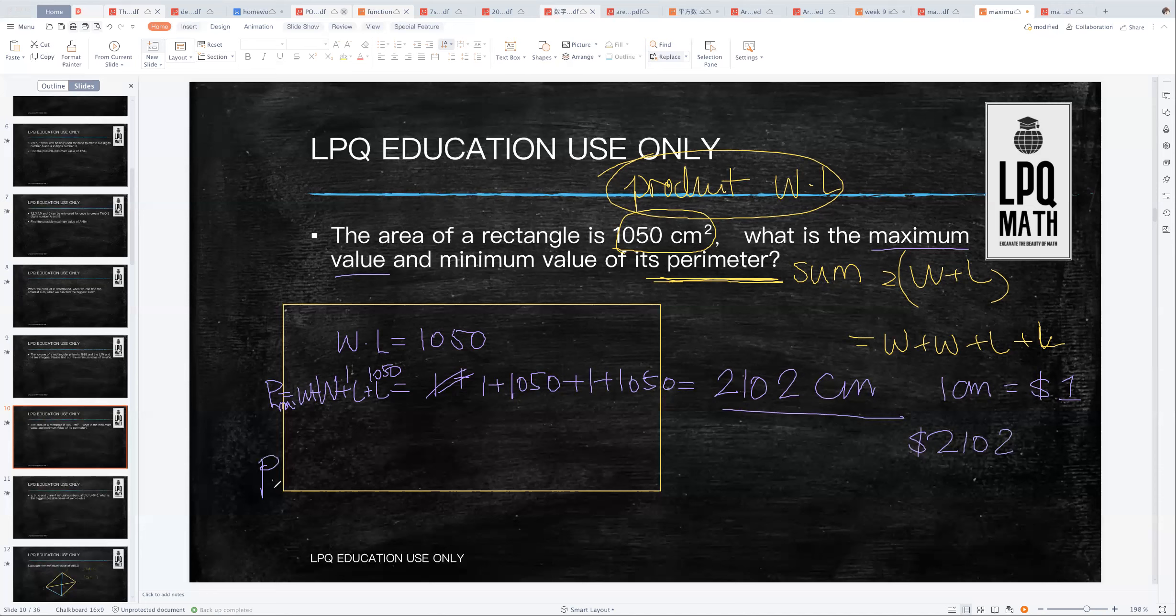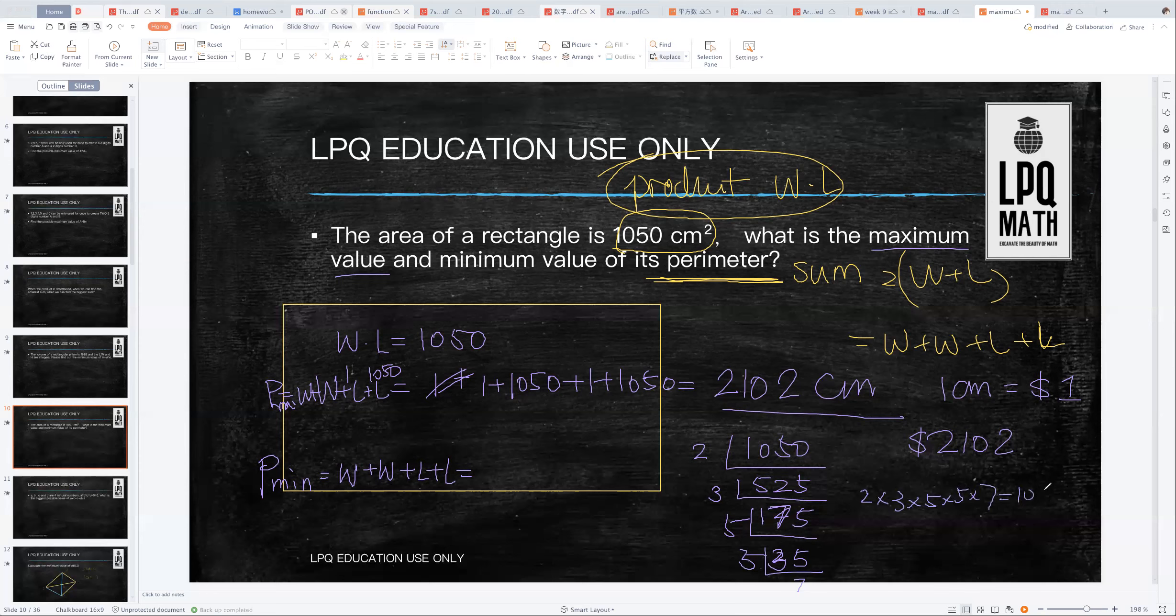How about we find the perimeter's minimum? The perimeter minimum still is W plus W plus L plus L. I'm going to prime factorization it: 2, 5, 2, 5, 3, 175, and 5, 35, and 5 and 7. So the answer will be 2 times 3 times 5 times 5 times 7 equals 1050.